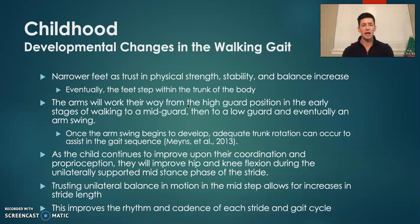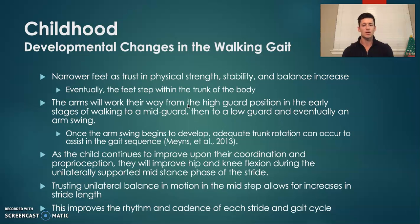Their arms, as they gain experience and trust and balance, will work from that high guard position to a low guard position and then into an arm swing. The development of the arm swing will help aid in oppositional movement to allow better hip extension and trunk rotation to occur, which assists in better stride length and better gait sequence.